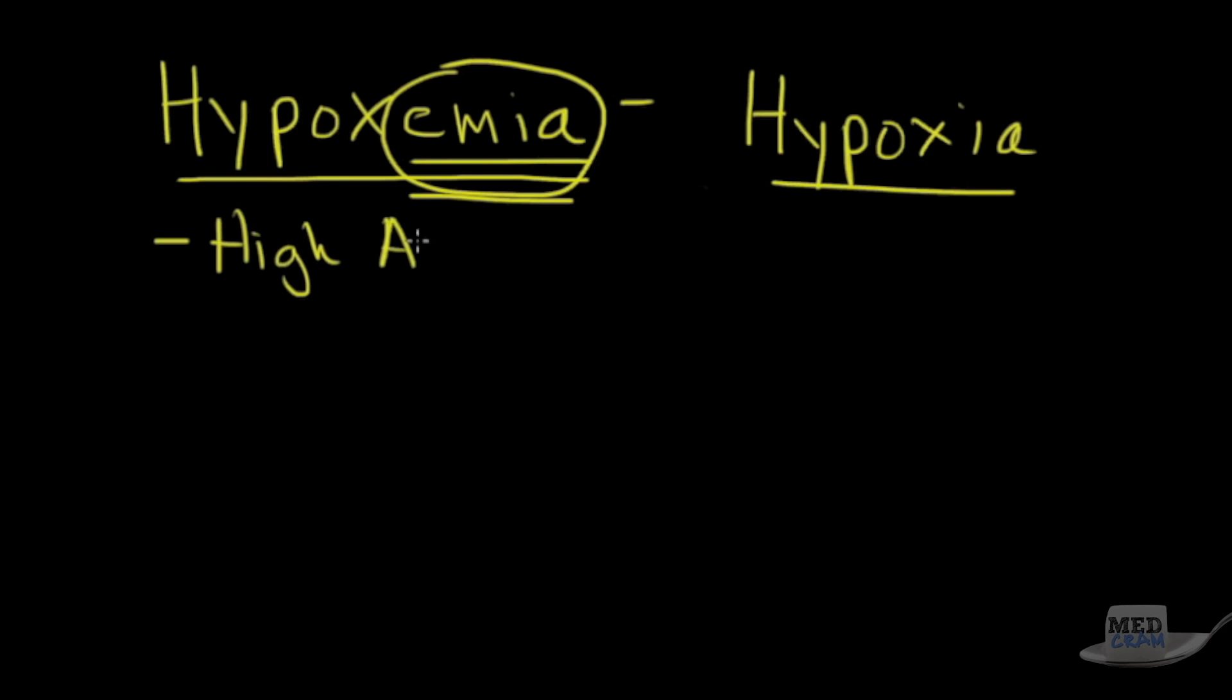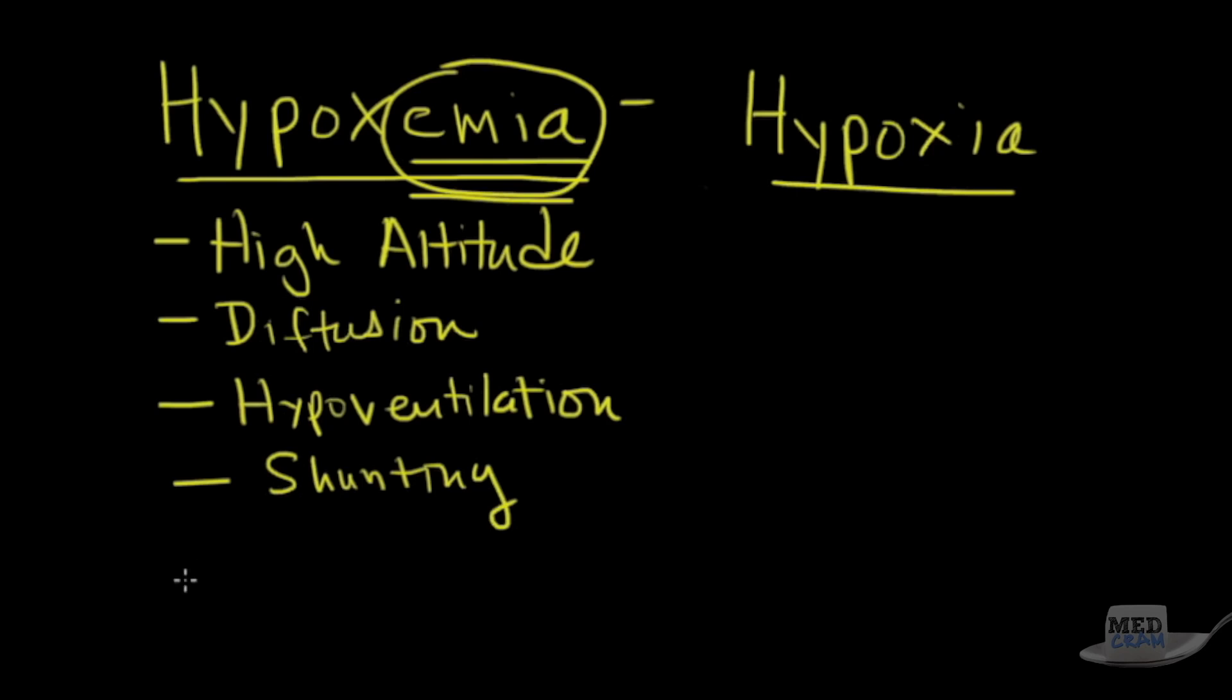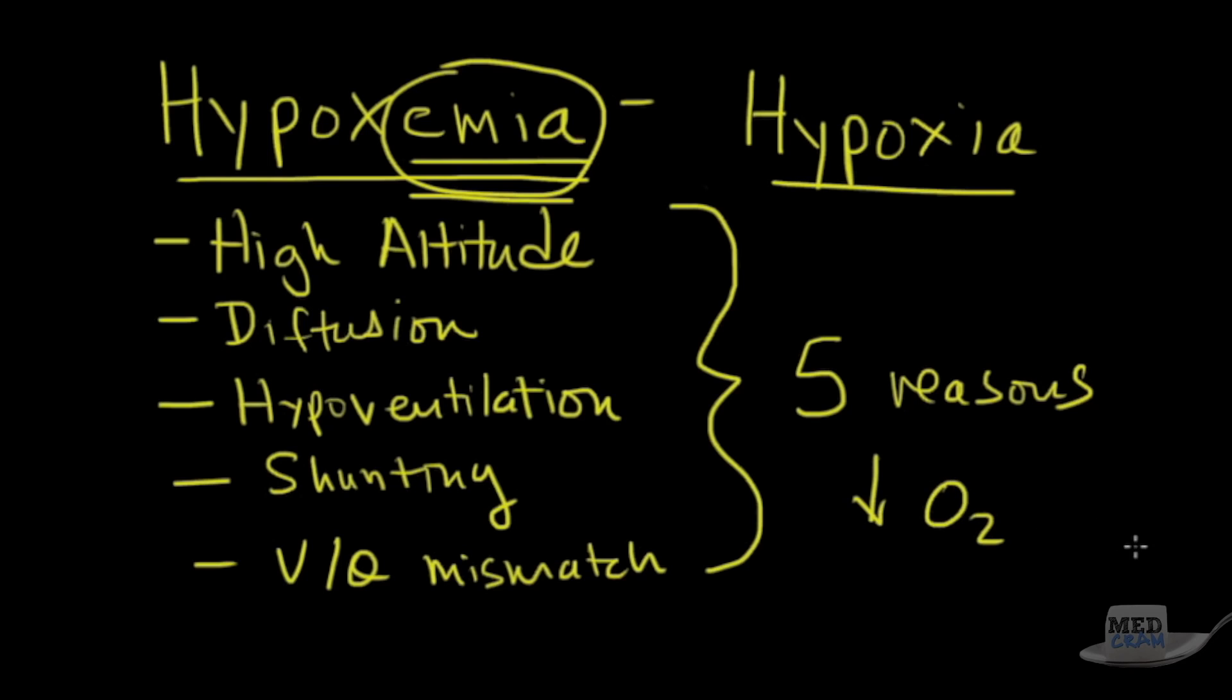So high altitude is one of those reasons. We'll go over that today. The other one is diffusion. The next one is hypoventilation. Next is shunting. And then finally, we're going to go over VQ mismatch. This will take a number of lectures to go over. So these are the five different reasons for low oxygen in the blood.